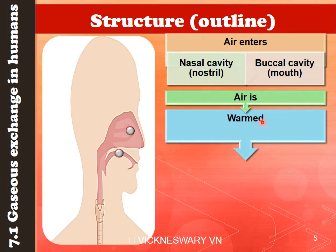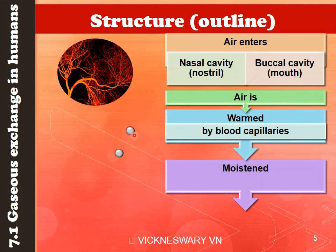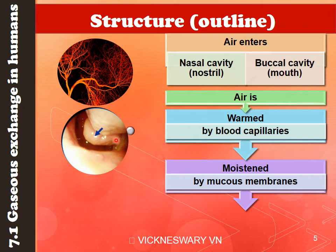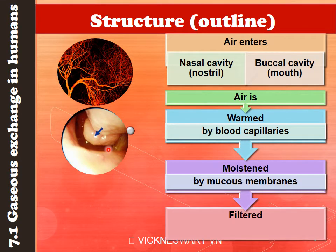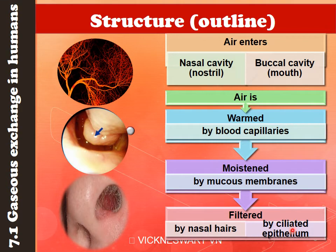Firstly, the air is warmed — its temperature is increased from room temperature to body temperature with the help of blood capillaries located in the cavities. Second, air in a gaseous state will be moistened with the help of mucous membranes located in the cavity. The third thing that happens is the air is filtered, because air will carry dust and microparticles which can include pathogens. Nasal hair filters the air, and deeper inside the cavity there are also ciliated epithelium cells which help in the filtering process.